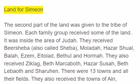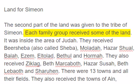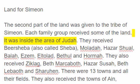Land for Simeon. The second part of the land was given to the tribe of Simeon. Each family group received some of the land. It was inside the area of Judah.